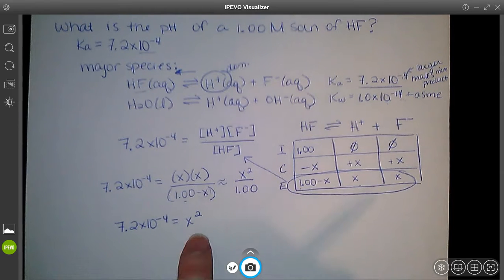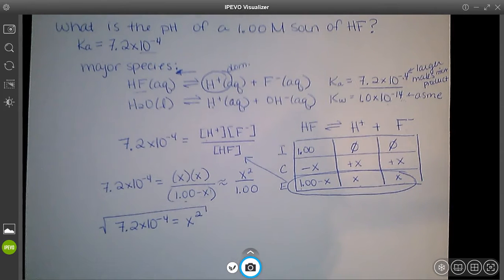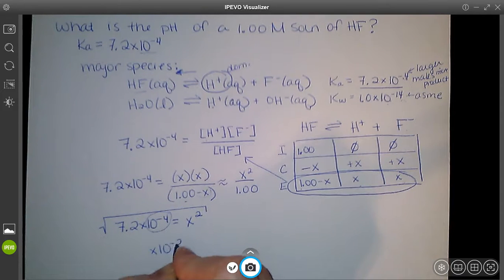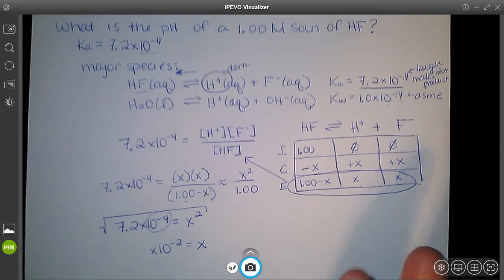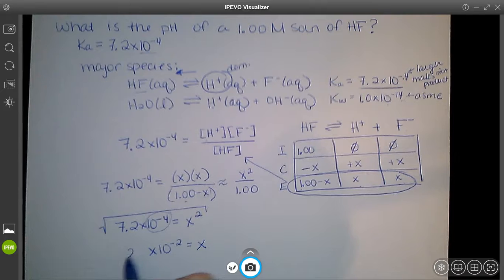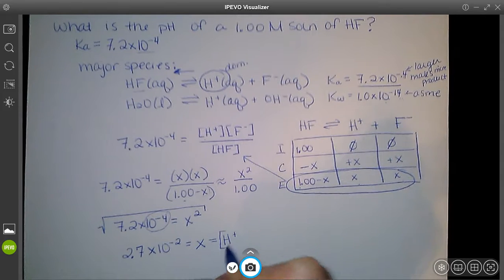We take the square root of both sides. The square root divides the exponent by 2, so it's going to be something times 10⁻². Since 3² = 9 is too big and 2² = 4 is too small, x is between 2 and 3. When you do it in the calculator, you get x = 2.7×10⁻², which is our concentration of H⁺.